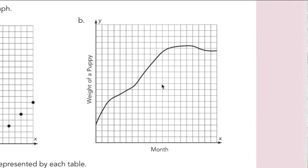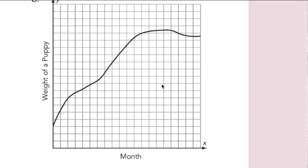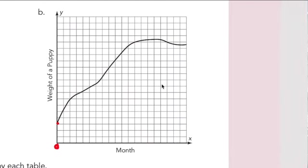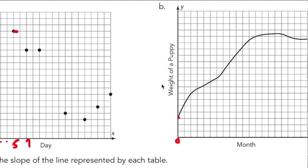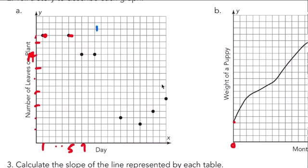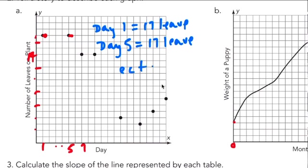Day seven is sixteen, fourteen leaves, so forth and so on. Each dot tells you the days and the leaves. Weight of the puppy, describe that at birth, zero days, puppy weighs three pounds. Write this down, okay, they're supposed to write this down. So day one, seventeen leaves, day five, there's seventeen leaves, etc., finish writing all the days and how many leaves there are.